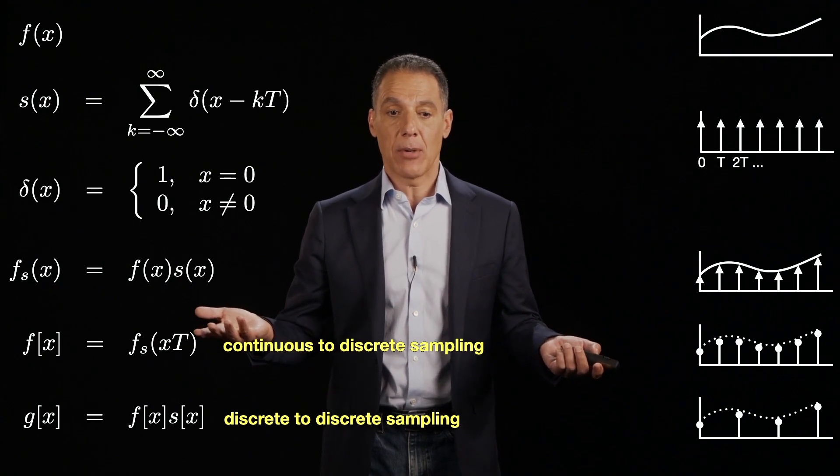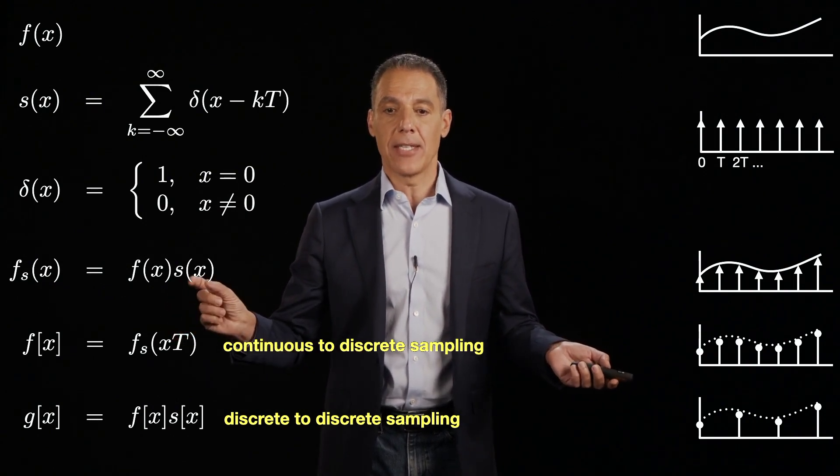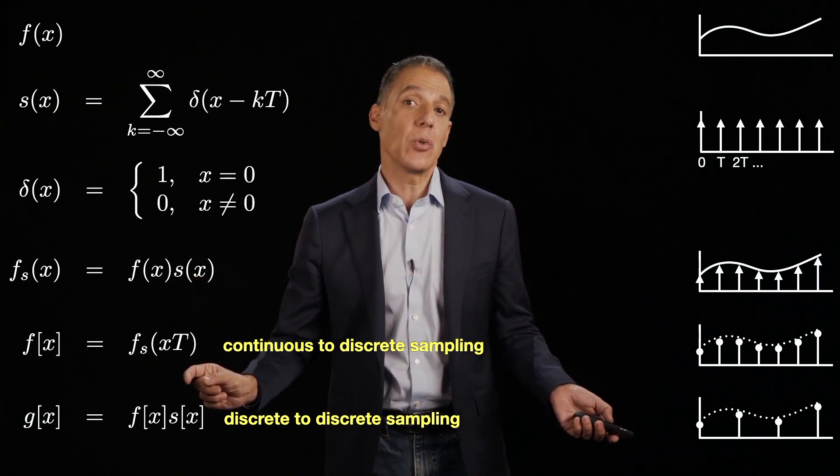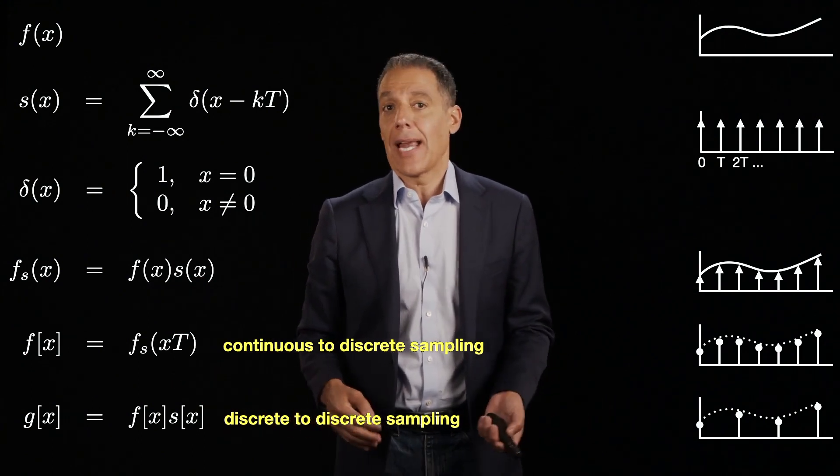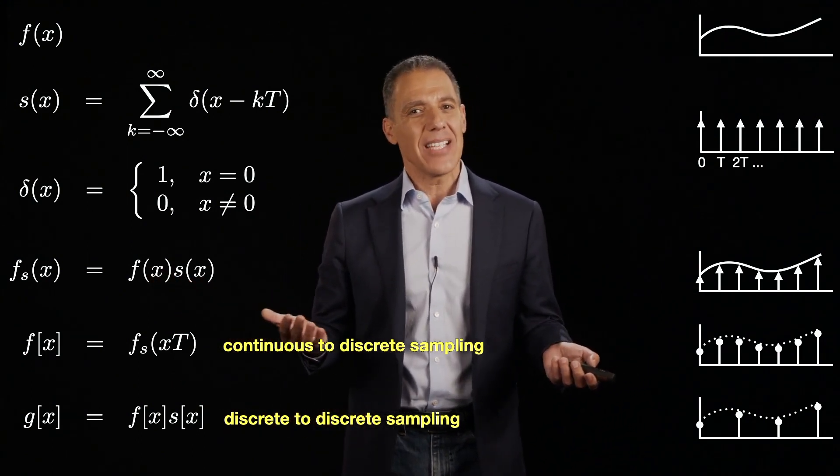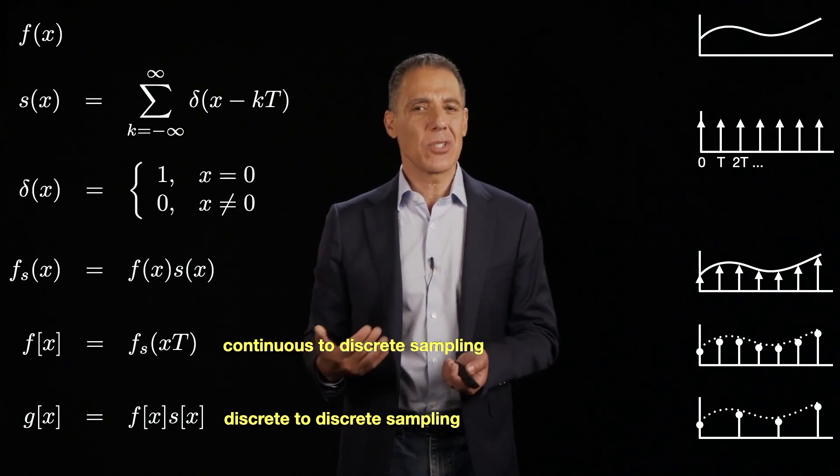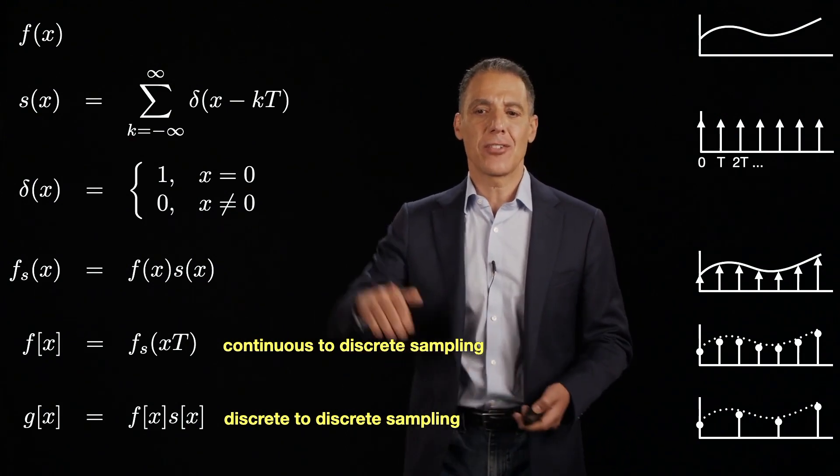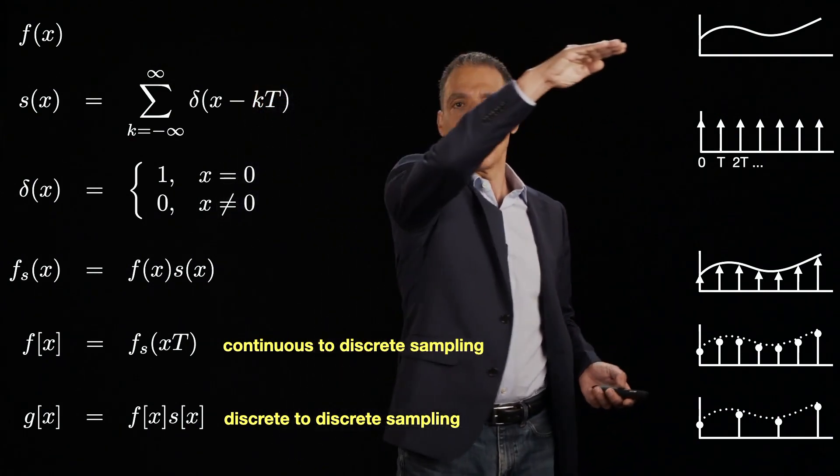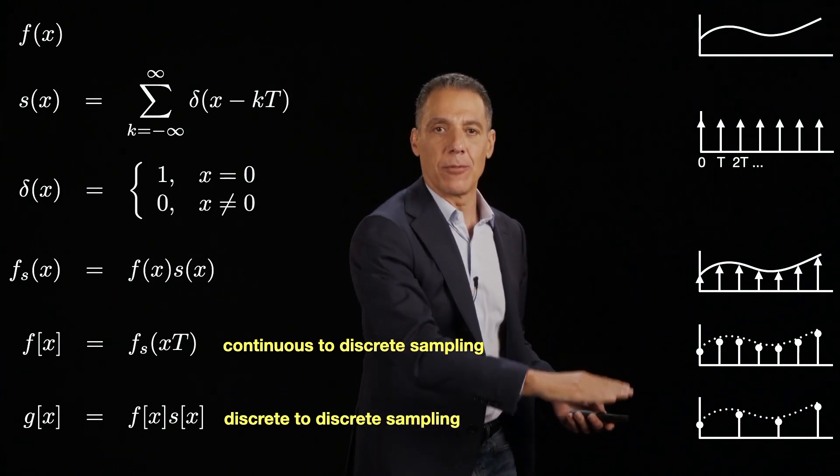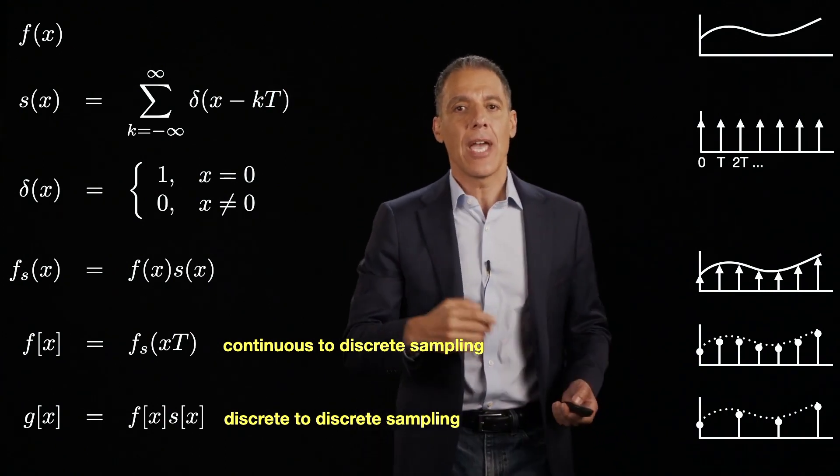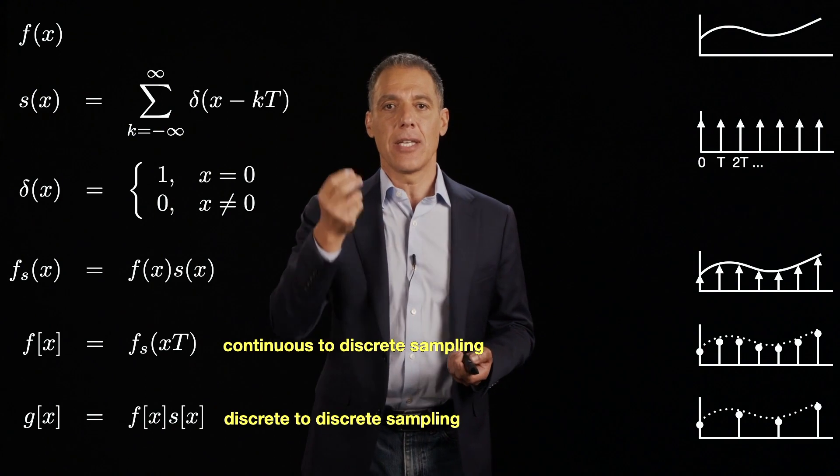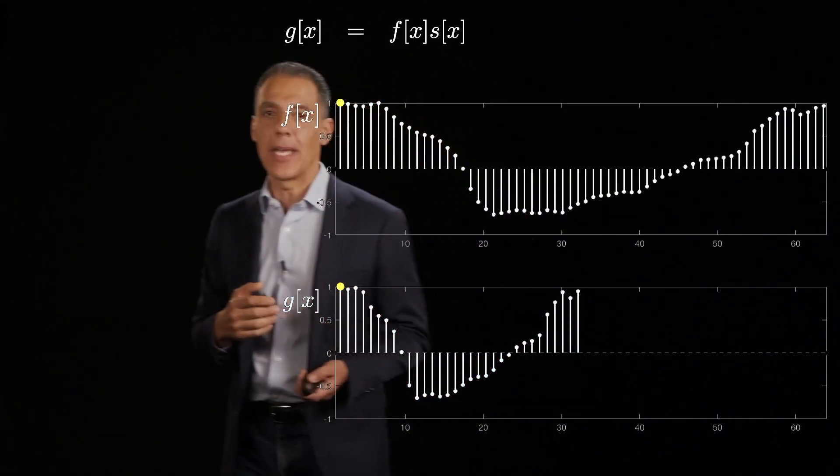For example, I might take this signal that has been sampled at every T value and maybe I want to sample it so it's every 2T. So I want half the resolution. Well, can I just throw away every sample and everything is fine? I mean, that doesn't ring true, does it? Because when you throw away information, it doesn't seem like it's going to be completely innocuous. And in the same way, we are throwing away some information. We need to think about it.